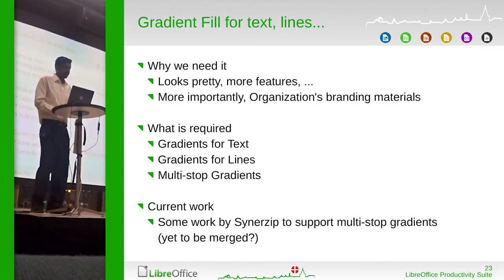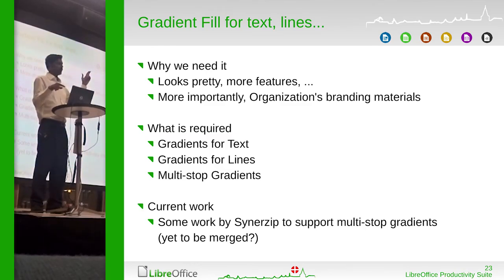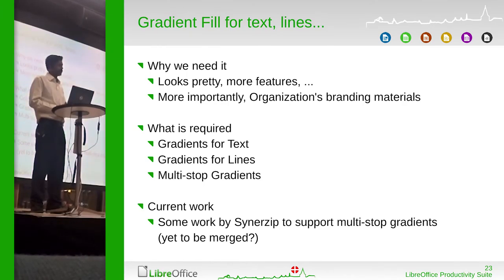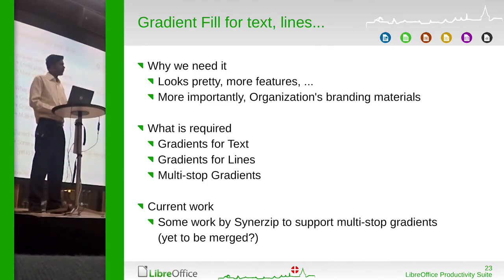Why do we need it? It looks pretty — more features of course — but the major point is that there are a lot of organizations with branding materials that depend on these. They have specific colors, specific stops, specific angles. In Ericsson for example, there's a specification that the gradient has to go from diagonal one end to the other. In such cases, using LibreOffice becomes very tricky currently. So we are trying to implement this feature. What is required is first gradients for text, gradients for lines, and then multi-stop gradients — we don't have multi-stop gradients for area fill either; we just have two-color gradients. There was some work being done by Synerzip but it's not merged yet.